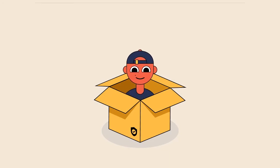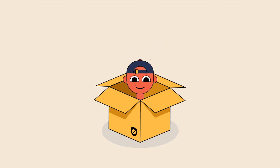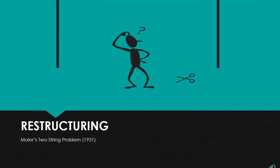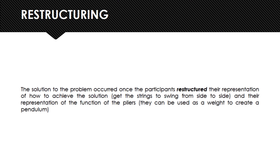This concept is actually the root of the famous expression 'thinking outside of the box.' Thinking outside the box, or restructuring, played a part in Maier's two-string problem in that the solution occurred only when participants restructured their representation of how to achieve the solution — specifically, their representation of the function of pliers changed, and their functional fixedness was overcome.